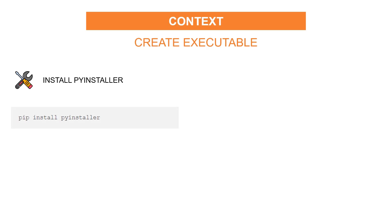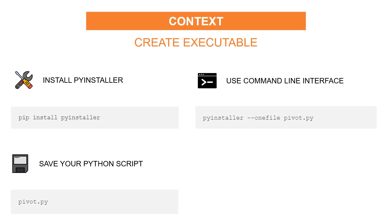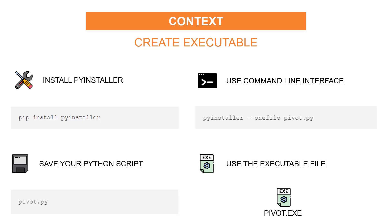There is a solution for this — the library PyInstaller. First, you install PyInstaller using Python pip. Then, you save your script used to perform the processing in a local folder and name it pivot.py, for instance. You can then use the command line interface of PyInstaller and enter the command. Finally, your pivot.py is converted to an executable file. More importantly, your colleague can also use it without installing Python. The executable file includes everything: the Python installation and all the libraries needed to run the script.